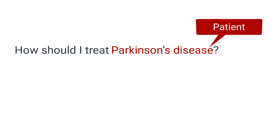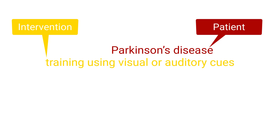Too many to consider to inform practice. When searching for Parkinson's using the PEDro Advanced Search in January 2021, there were over 700 articles in the search results — far too many to consider to answer the question. One strategy to narrow down your search results is to identify more search terms by adding components of a PICO question. One strategy for Parkinson's disease is using visual or auditory cues to change stepping rate, so we could replace 'how should I treat' with 'training using visual or auditory cues'.